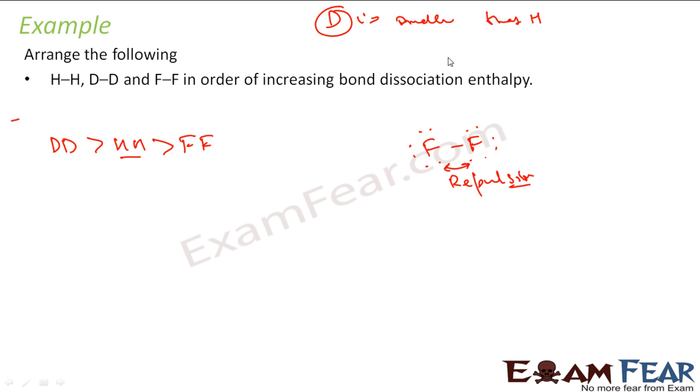So bond dissociation enthalpy is something which you have seen also. For D-D it is more because the size of D-D is smaller than H. So this is the order.